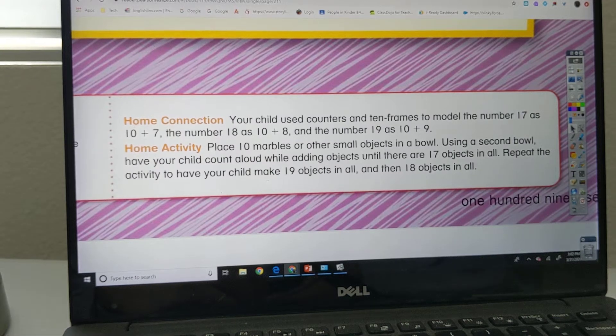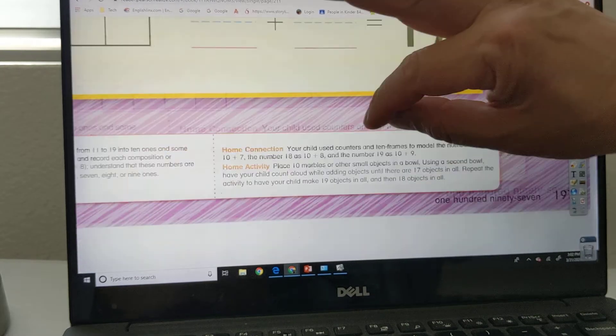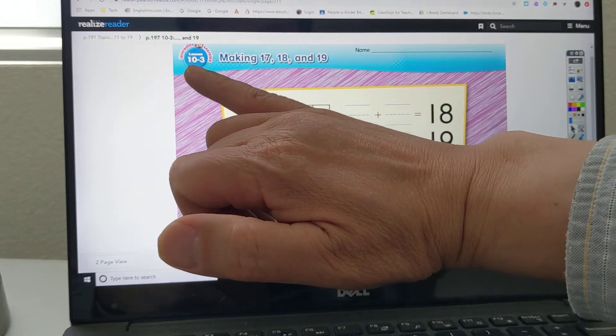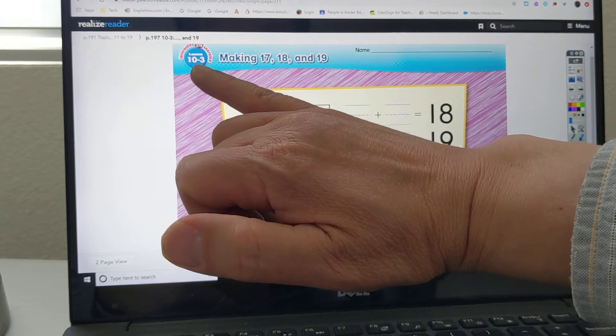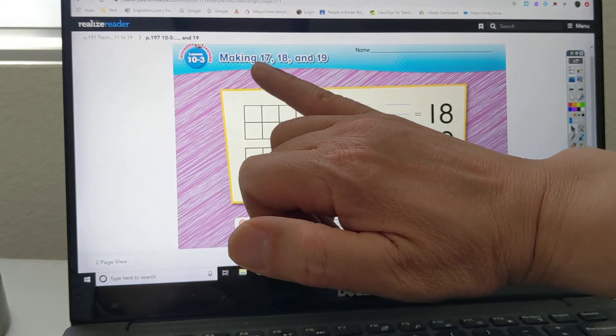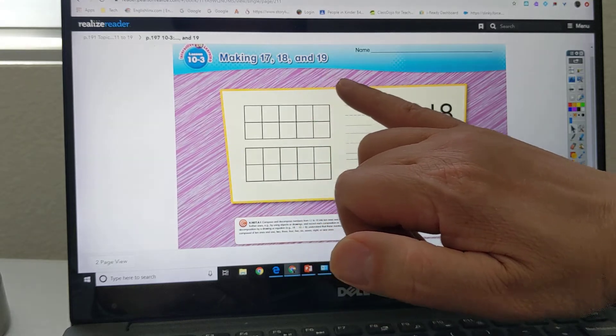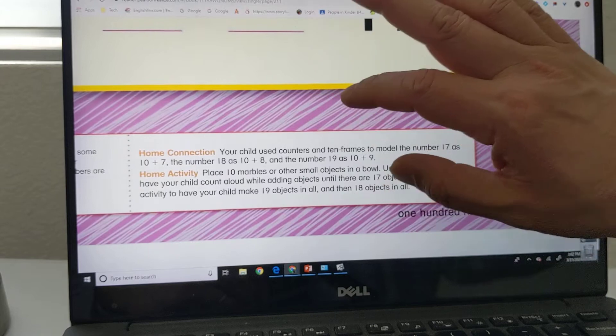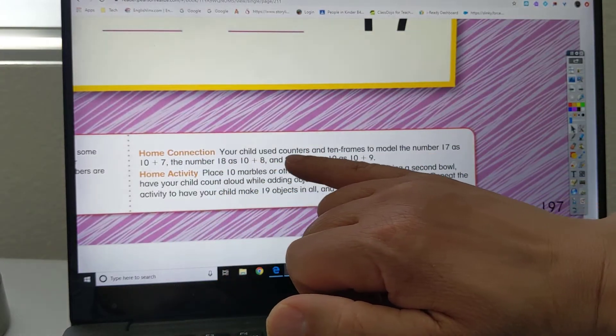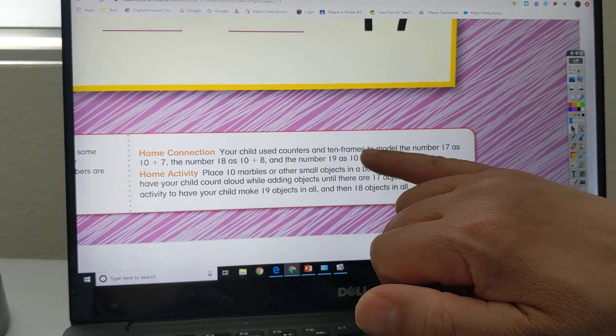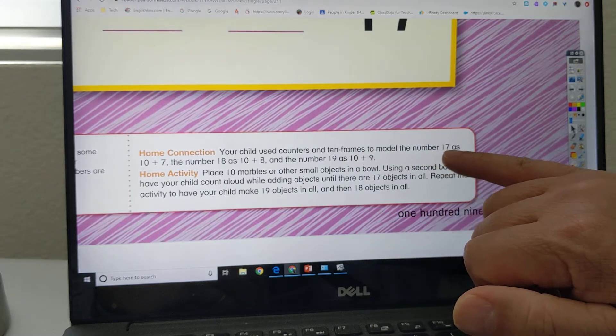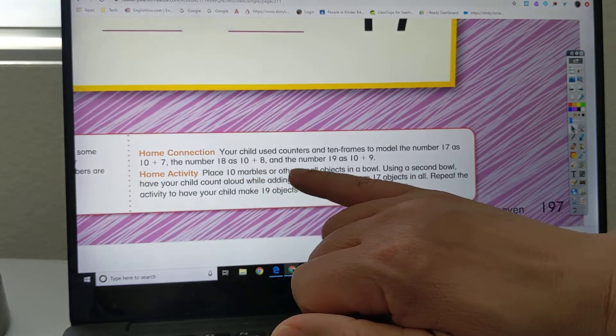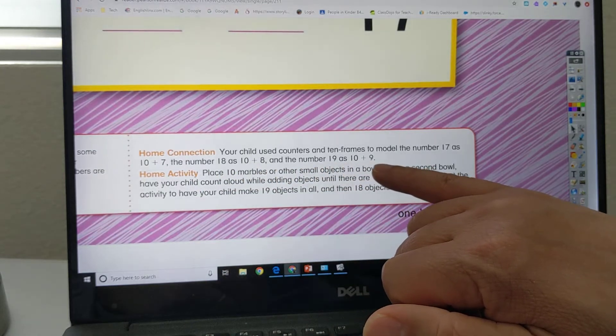Good morning boys and girls. We've come to lesson in Envision Math 10-3: making 17, 18, and 19. Let's come over here and see what it's saying. It says home connection. Your child used counters and 10 frames to model the number 17 as 10 plus 7, the number 18 as 10 plus 8, and the number 19 as 10 plus 9.